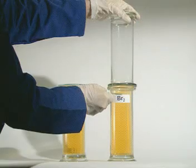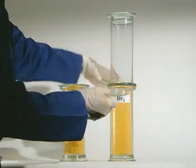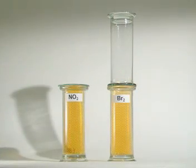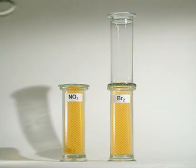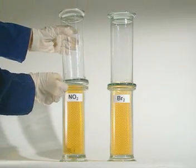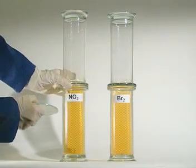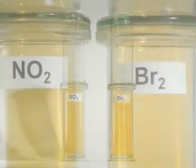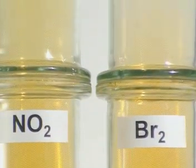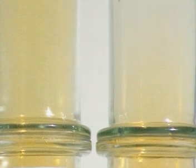This simple setup can be used to compare the rate at which different gases diffuse into air. Nitrogen dioxide gas on the left is similar in colour to bromine on the right, but bromine molecules are much heavier. The lighter nitrogen dioxide diffuses more quickly.